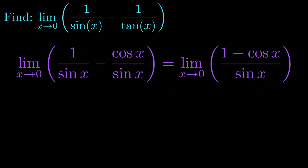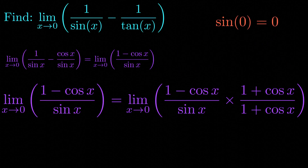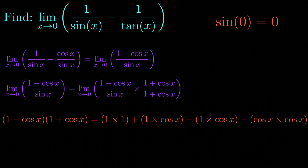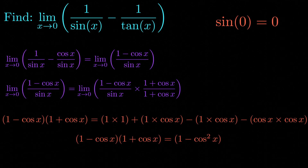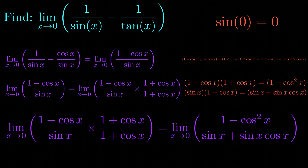Since sine of 0 is equal to 0 and we can't divide by 0, we multiply our limit by something that eliminates the sine x from the denominator. We multiply the numerator and denominator by 1 plus cosine of x. In the numerator, 1 minus cosine of x times 1 plus cosine of x equals 1 minus cosine squared of x. In the denominator, sine of x times 1 plus cosine of x equals sine of x plus sine of x times cosine of x. This gives us the limit as x approaches 0 of 1 minus cosine squared of x divided by sine of x plus sine of x times cosine of x.